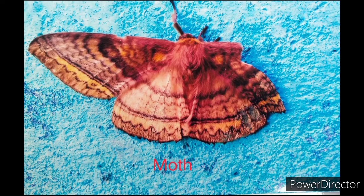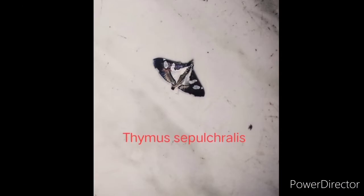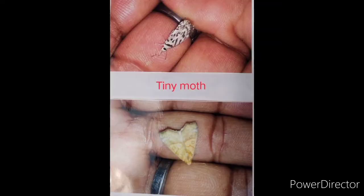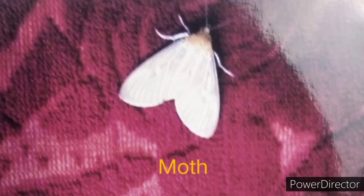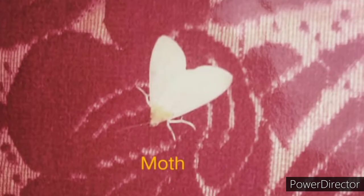Next is the scarlet tiger moth, a moth with damaged wings, thymus sepulcralis, a tiny moth, and another example of a moth.